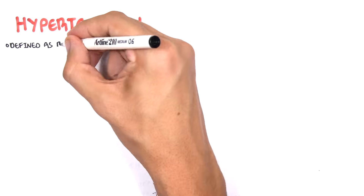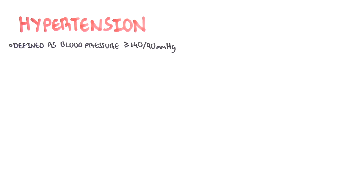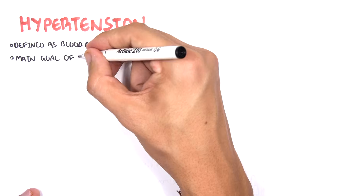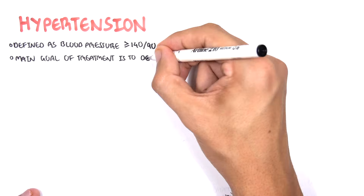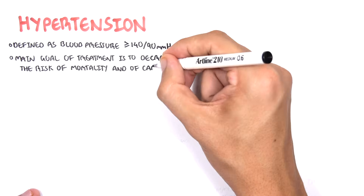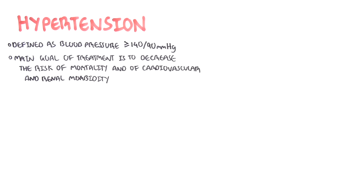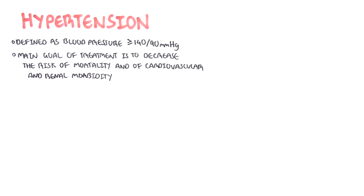Hypertension is defined as blood pressure of 140 over 90 mmHg or greater. The main goal of treatment is to decrease the risk of mortality and of cardiovascular and renal morbidity.